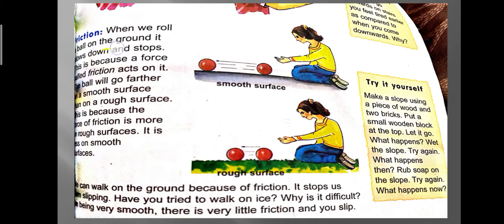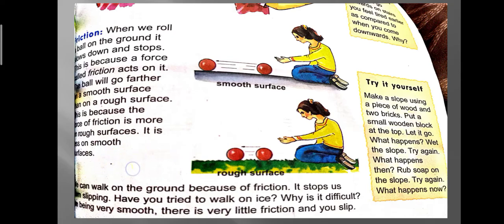When we roll a ball on the ground it slows down and stops — this is because of friction. The ball goes further on a smooth surface than on a rough surface because the force of friction is greater on a rough surface and less on a smooth surface.